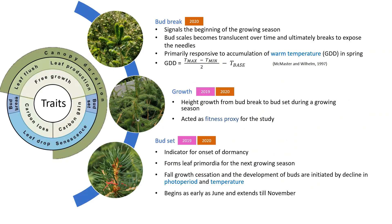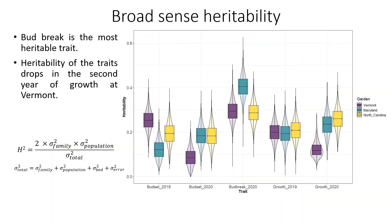The functional traits studied are bud break, bud set, and height growth. These traits encompass a growing season. Bud break or bud flush signals the beginning of the growing season and is primarily responsive to accumulation of warm temperature in spring, and thus is measured in cumulative growing degree days. The amount of height growth during a single season is used as a fitness proxy in this study. Bud set — the fall growth cessation — is initiated by decline in photoperiod and temperature, and can begin as early as June and extend till November. All traits studied had a heritability of 20% or more, with bud break being the most heritable trait.